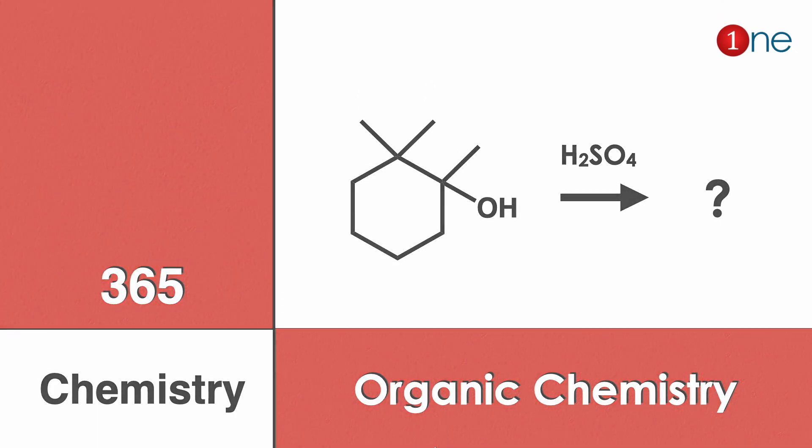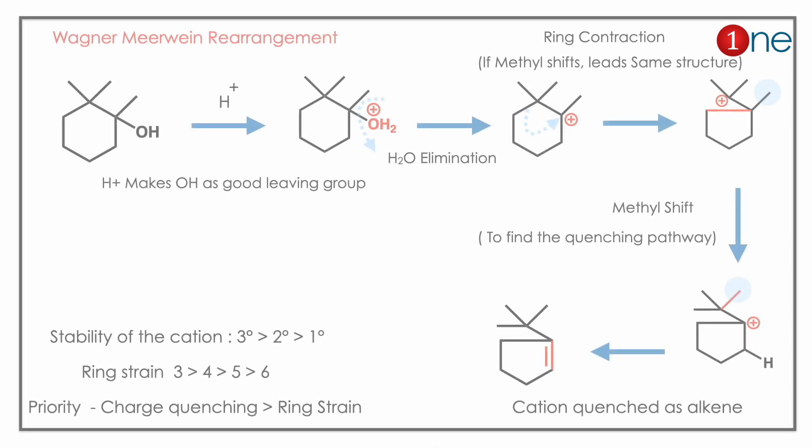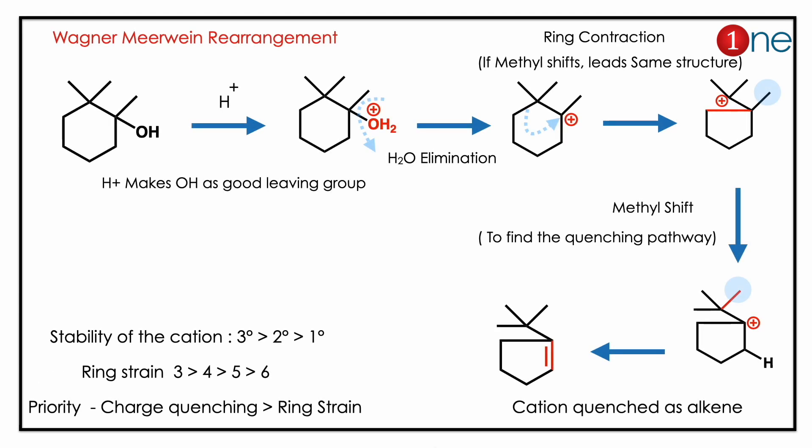Here you have an alcohol and you are using acid, so definitely carbocation formation and Wagner-Meerwein rearrangement occur. The acid makes the alcohol a good leaving group. Carbocation formation happens, and always the most stable cation forms. Here, ring contraction happens.